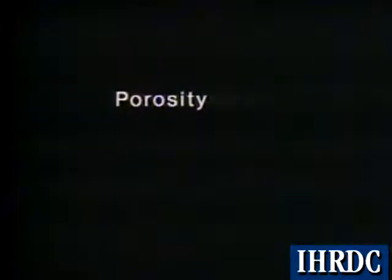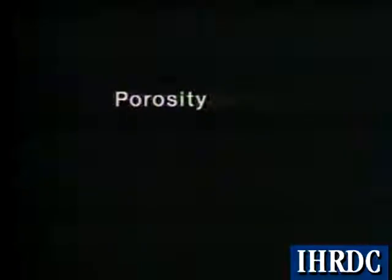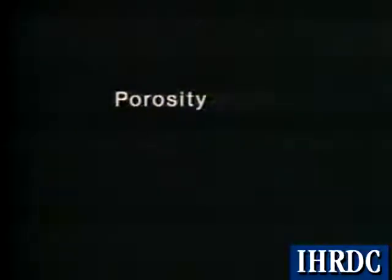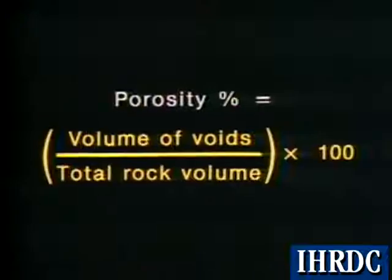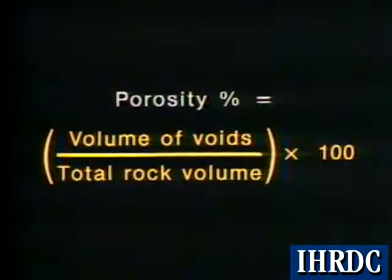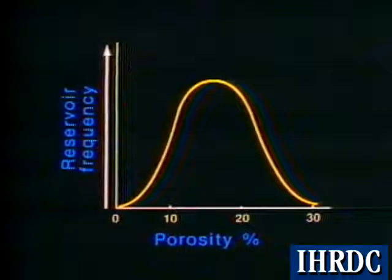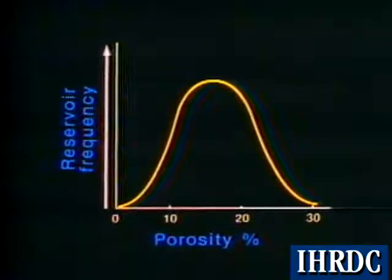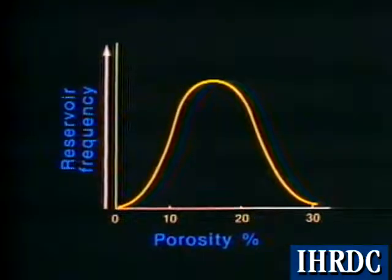Porosity is the first of two essential requirements for a rock to act as a hydrocarbon reservoir. It's usually expressed as a percentage using the formula shown here. Porosity is often represented by the Greek letter phi. Most reservoirs have porosities in the range of 5 to 30 percent. Any porosity less than 5 percent is very seldom commercial, and any porosity over 35 percent is extremely unusual.